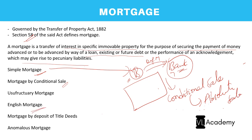An English mortgage has a similar concept: B transfers the property to the bank, and upon full repayment the bank executes a sale deed back to B. Both English mortgage and mortgage by conditional sale involve transfer of title to the lender subject to conditions of repayment, and both concepts should be read together.